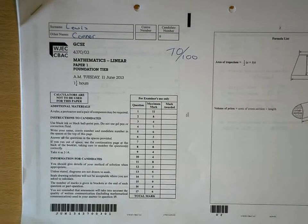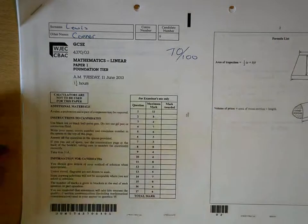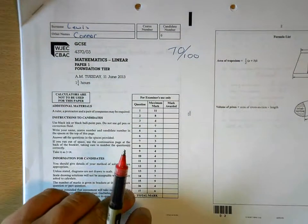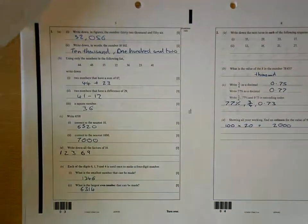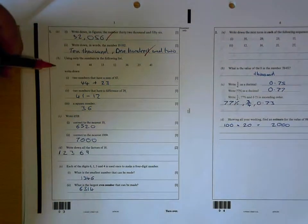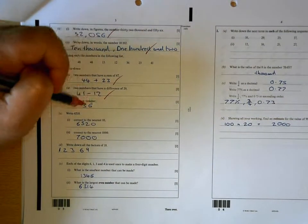Okay Connor, so you've come from set three. You did the higher tier exam in the summer where you got a grade D, so let's see how you get on with this foundation tier paper. You're anticipating 70, which should be a rock-solid C. Let's see how you get on.